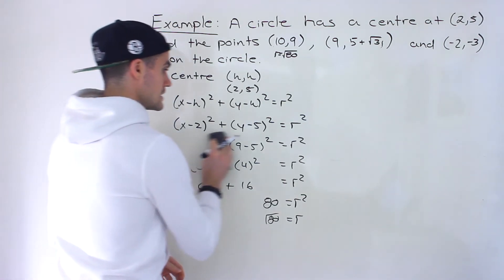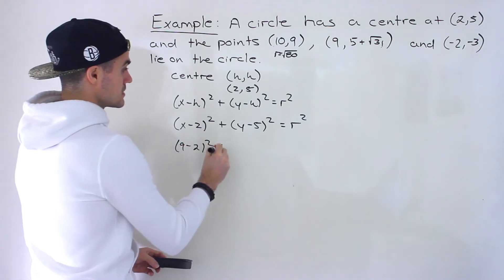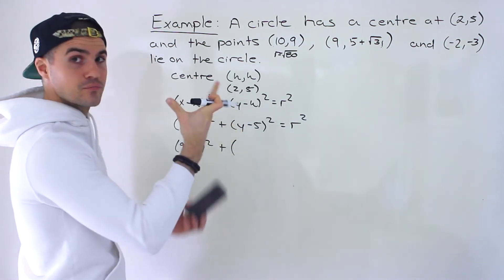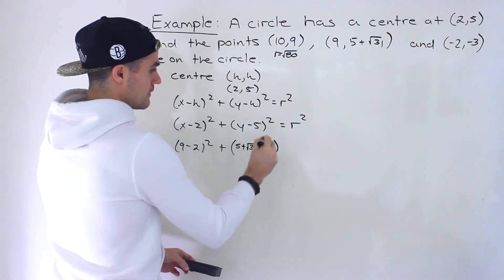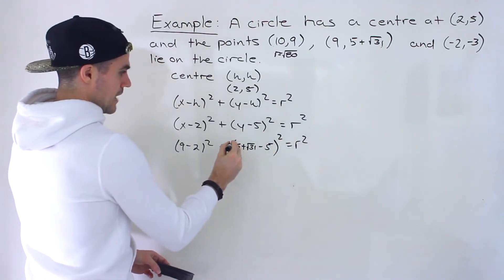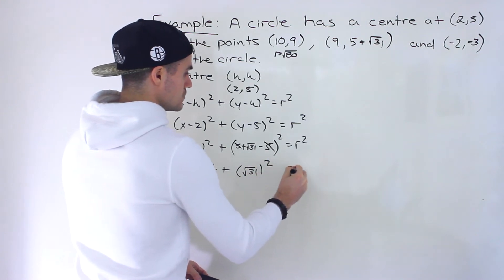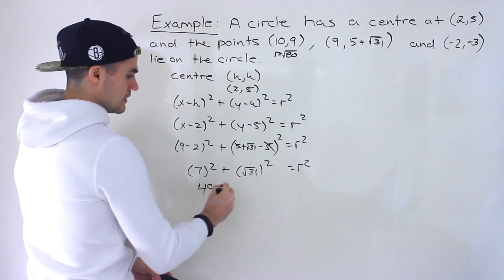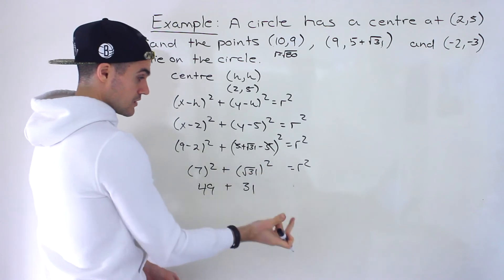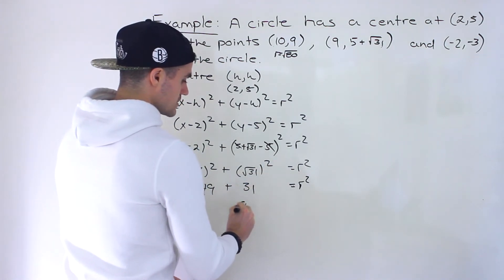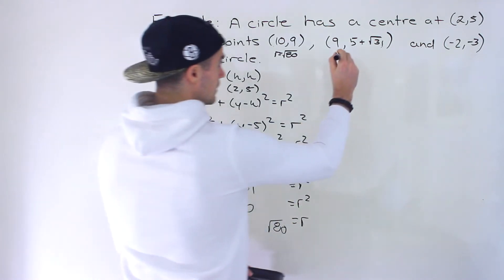Now let's plug in the second point: x = 9, y = 5 + √31. We get (9 − 2)² + (5 + √31 − 5)² = 7² + (√31)² = 49 + 31 = 80. The square of a square root just gives what's under the radical, so r² = 80, and the radius is again √80.